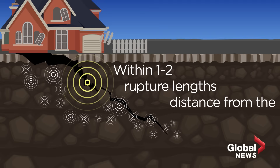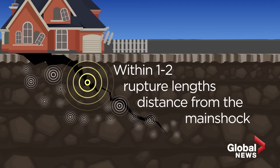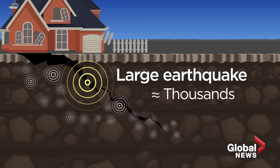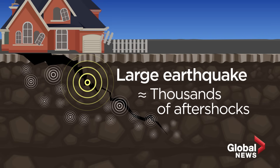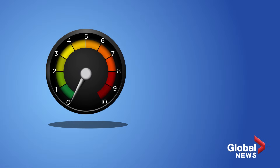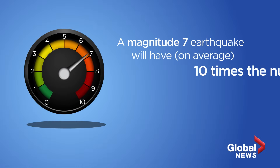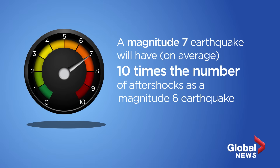Aftershocks usually originate at or near the focus of the main earthquake. Generally, the bigger the main shock, the larger and more frequent the aftershocks. For example, a magnitude 7 earthquake will have, on average, 10 times the number of aftershocks as a magnitude 6 earthquake.